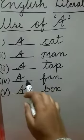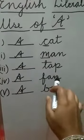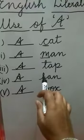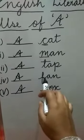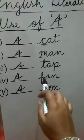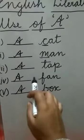Fourth one, A fan, F-A-N, fan. The first letter of fan is F. So F is a consonant, it is not a vowel. So we will use here A.